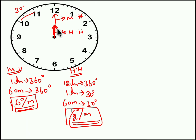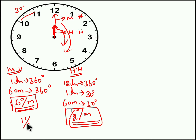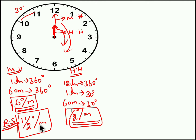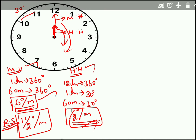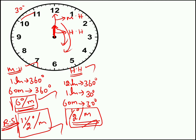Both needles are moving in the same direction. Whenever both needles move in the same direction, to find the relative speed we take the difference: speed of the faster moving object minus speed of the slower moving object. So 6 degrees per minute minus half a degree per minute gives us 11/2 degrees per minute. So 11/2 degrees per minute is the relative speed of both needles — meaning in one minute, the distance created between the minute hand and the hour hand is 11/2 degrees.